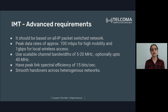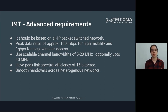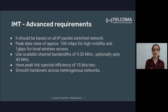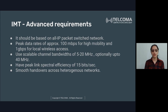The second IMT Advanced requirement is about peak data rate. The peak data rate is approximately 100 Mbps for high mobility users and 1 Gbps for local wireless access or stationary users.